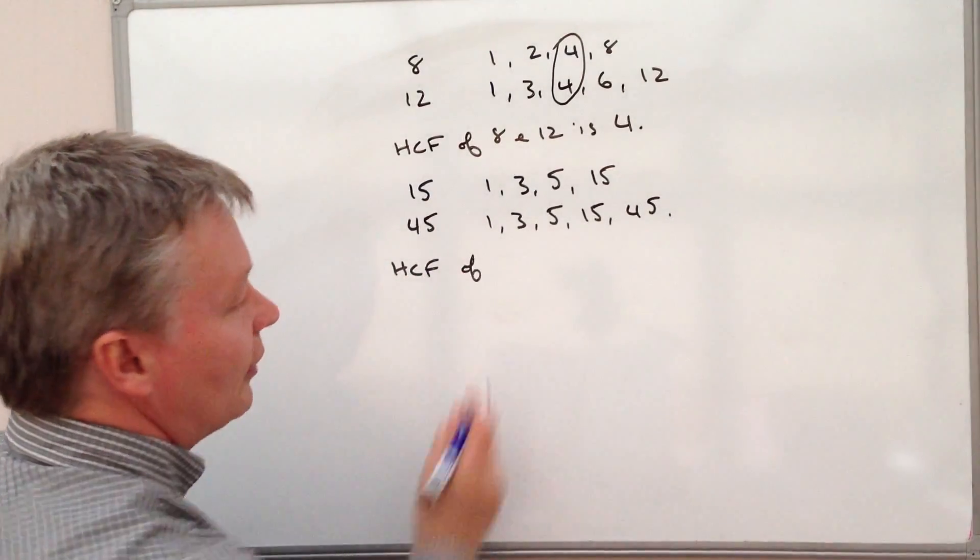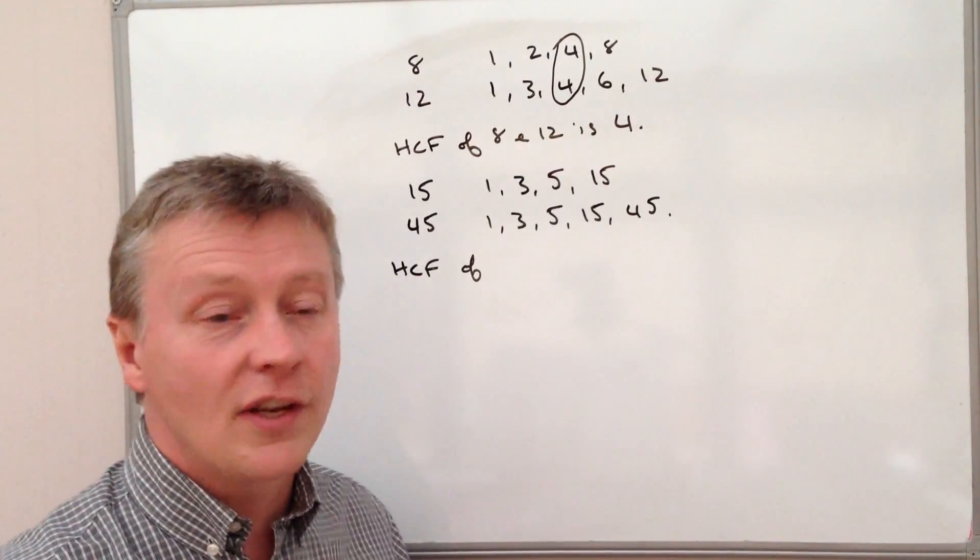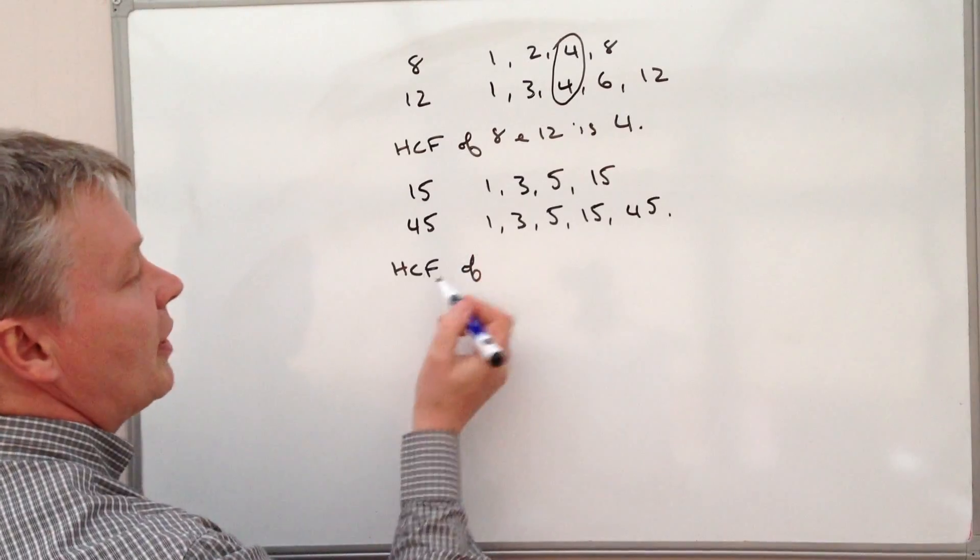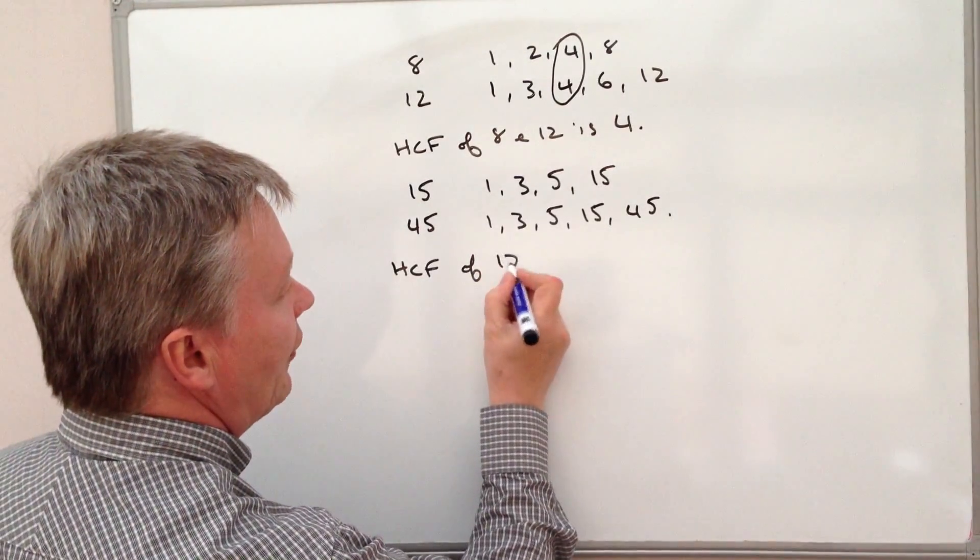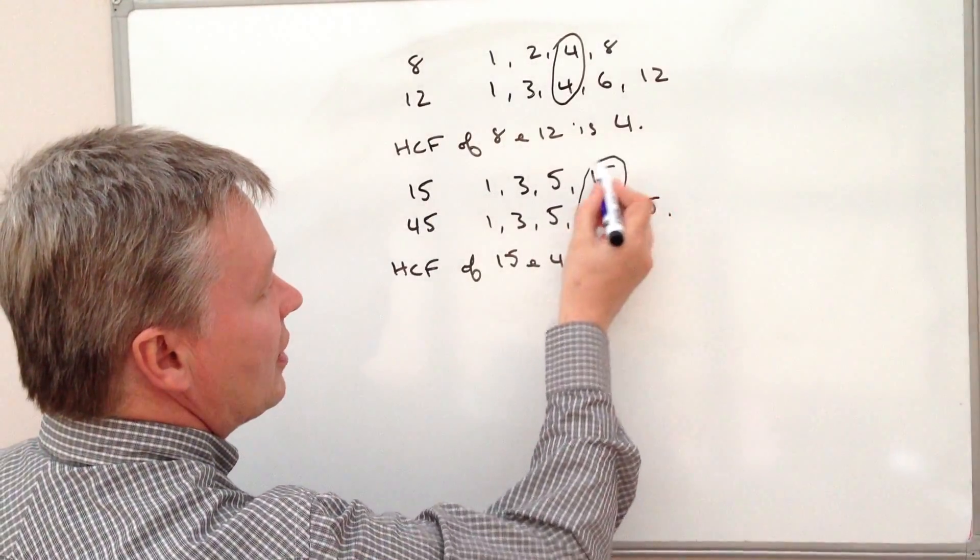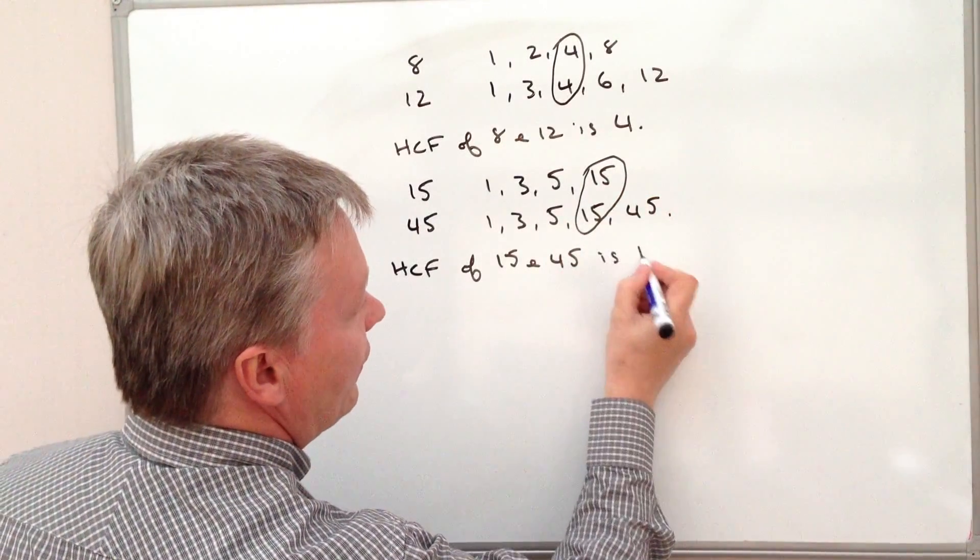Although I can find out the highest common factor, do please have a look at the other videos and decide for yourself which method you're going to use. This particular one will work, because the highest common factor of 15 and 45 is the highest number, which is 15 there.